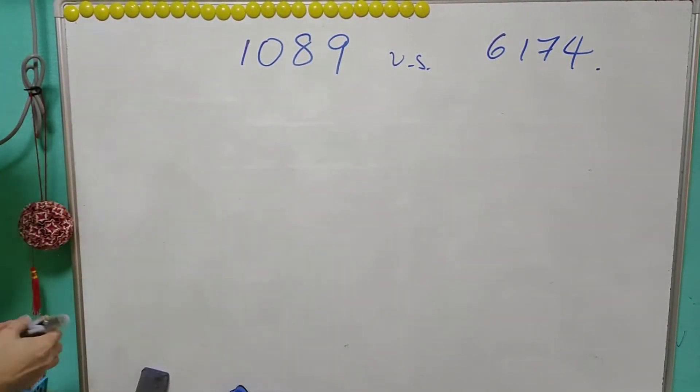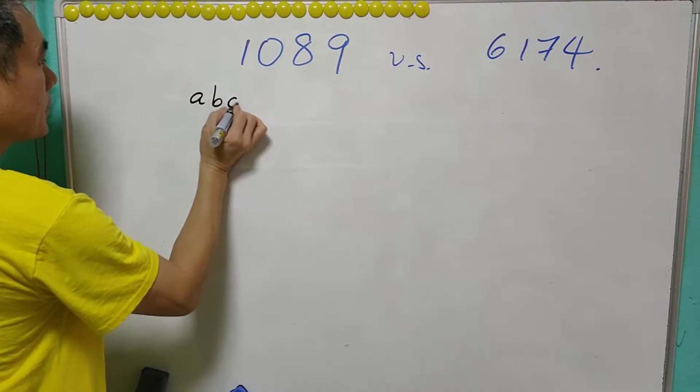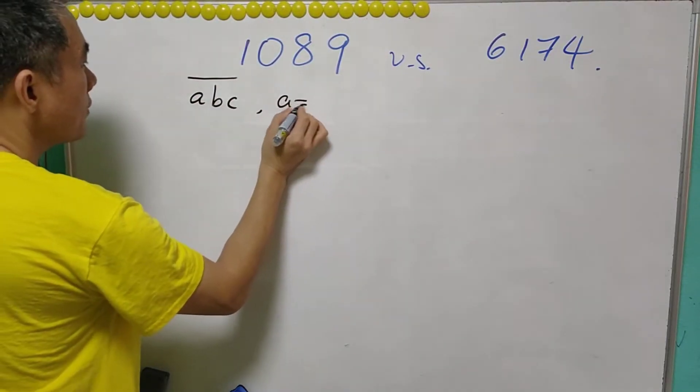We can obtain this 1089 by using this operation: given any three digit number ABC with A not equals to C.